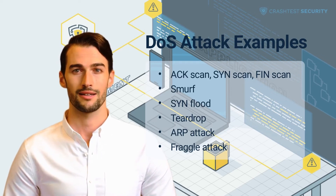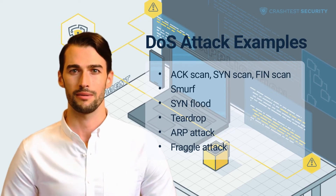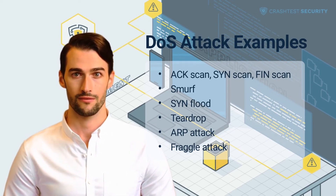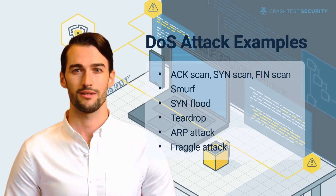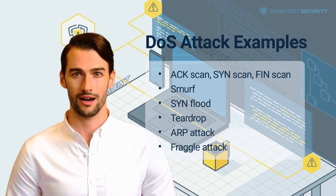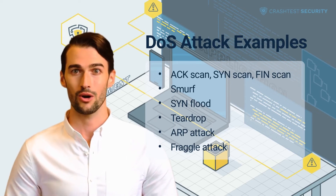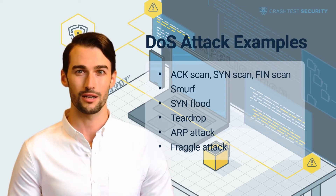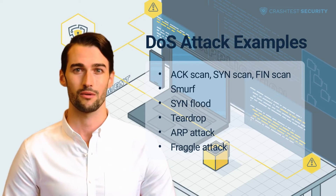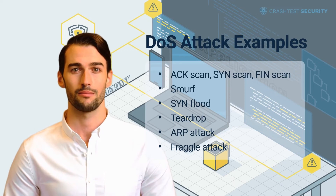The teardrop attack exploits a vulnerability associated with older operating systems and TCP/IP implementation. Fragments are reassembled afterward; however, a TCP/IP fragmentation reassembly bug can be found in many older systems. The bug consists of their inability to reassemble packets whose offset fields overlap. Attackers exploit this bug when launching a teardrop attack by sending packets with overlapping and oversized payloads, making it impossible for the receiving system to reassemble them and ultimately leading to its crash.